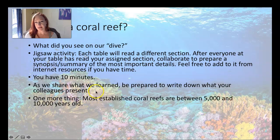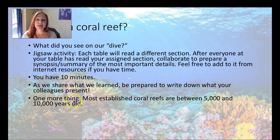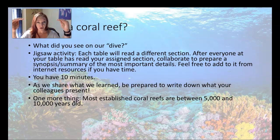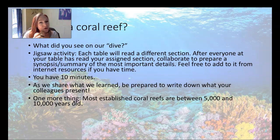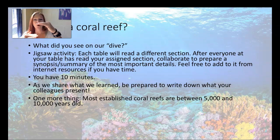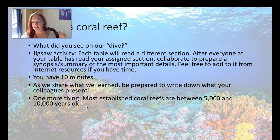Just a couple more facts for you. Most established coral reefs — the ones that are extant or alive right now on our planet — have been there for five to ten thousand years. That's how old these reefs are. The corals build upon each other; they compete for space and they have little battles with each other. Corals have stinging cells on them and they aren't afraid to use them. They actually have little coral fights — they kill each other and grow over each other — and it results in these structures that can be hundreds of feet thick.